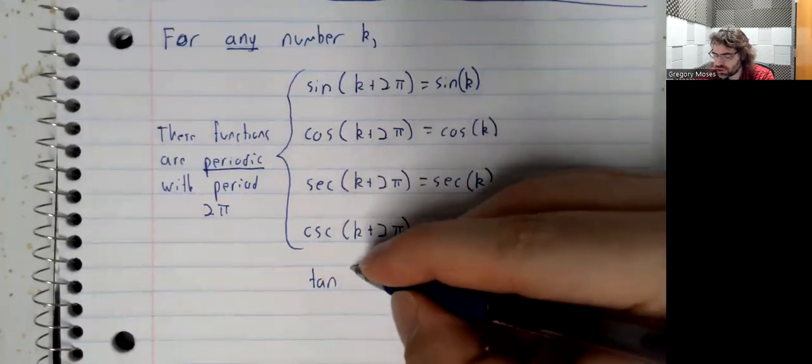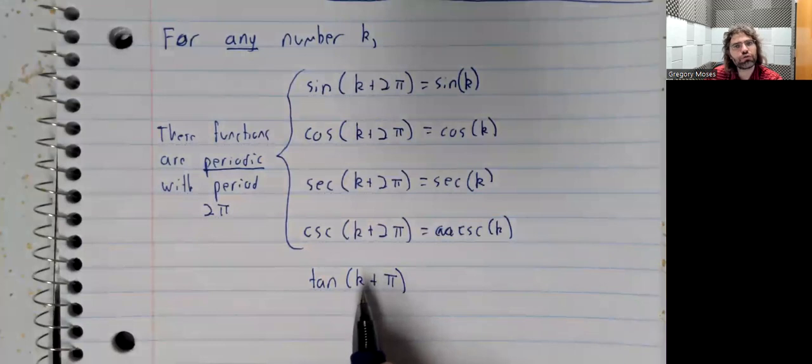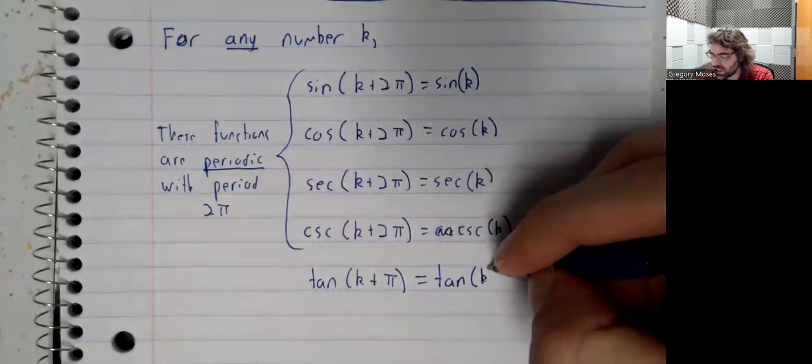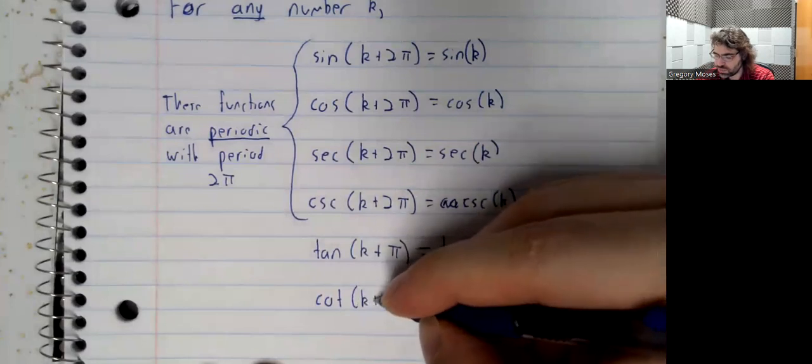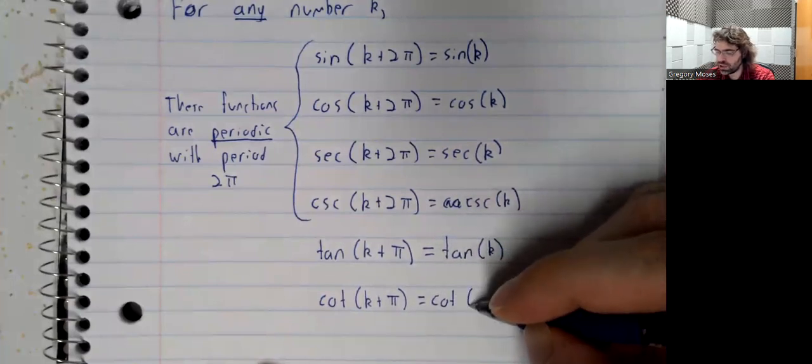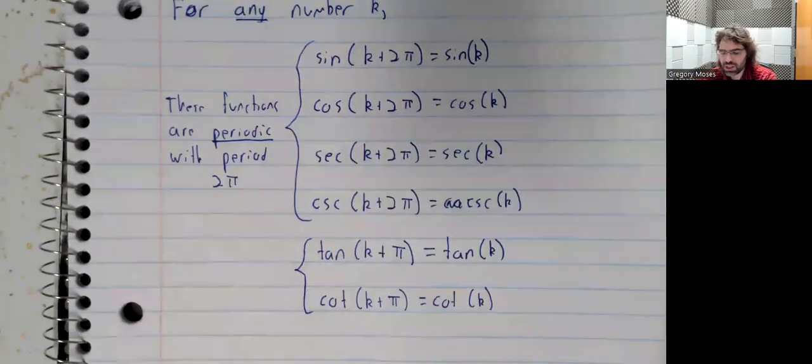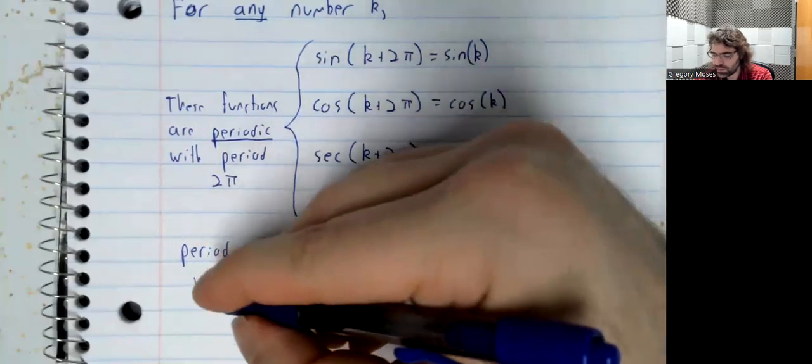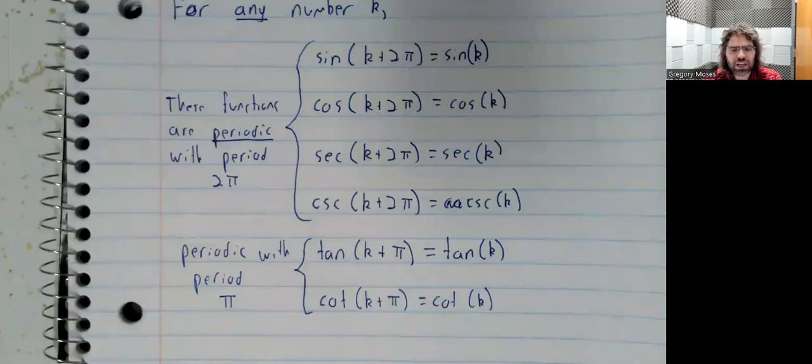The tangent of k plus pi—notice that we don't have the two written here—remember, the tangent of k plus pi is the same as the tangent of k. And the cotangent of k plus pi is always going to be the cotangent of k. We say these functions are periodic with a period of pi rather than 2 pi.